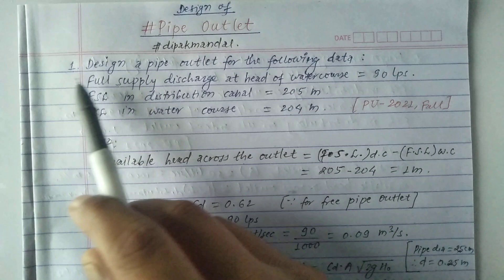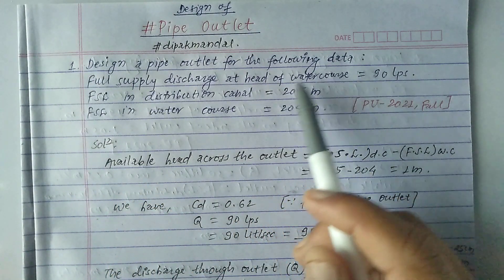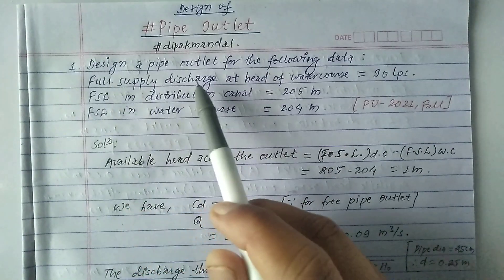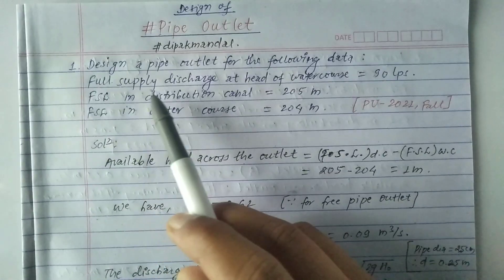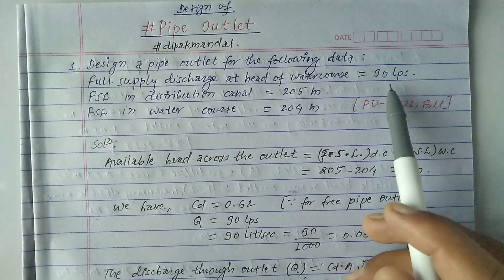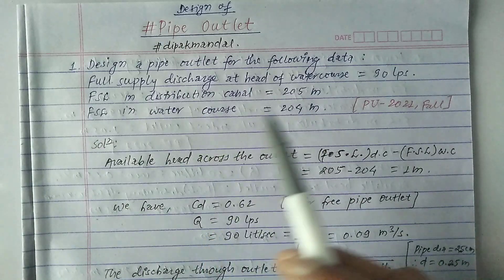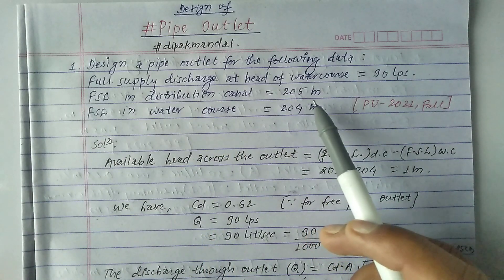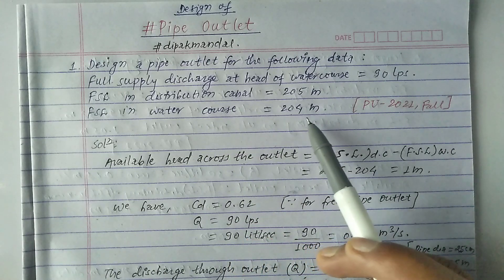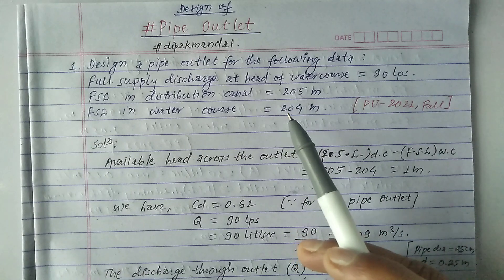The question asks us to design a pipe outlet for the following data. Full supply discharge at head of water course is 90 lps. Full supply level in distribution canal is 205 meters, and full supply level in water course is 204 meters.